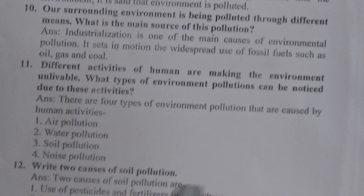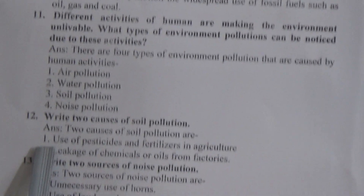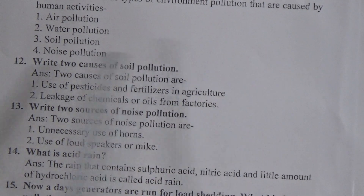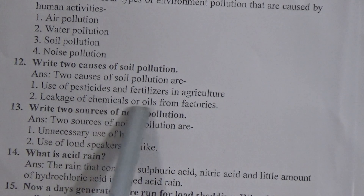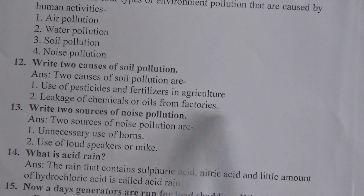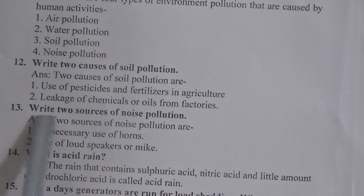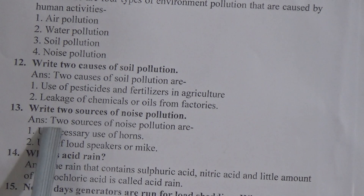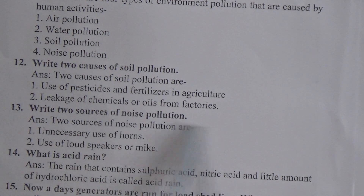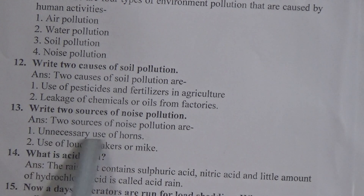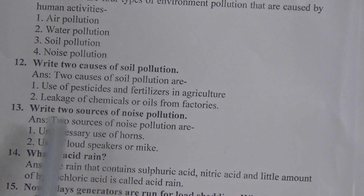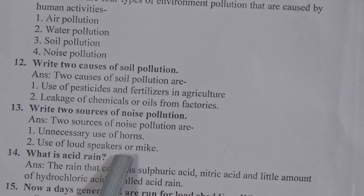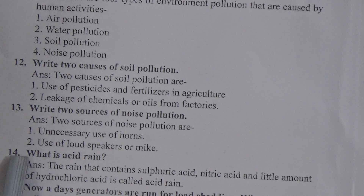Question number 12: write two causes of soil pollution. The answer is: two causes of soil pollution are — first, use of pesticides and fertilizers in agriculture; second, leakage of chemicals or oils from factories. Question 13: write two sources of noise pollution. The answer is: two sources of noise pollution are — first, unnecessary use of horns; and second, use of loudspeakers or mics.